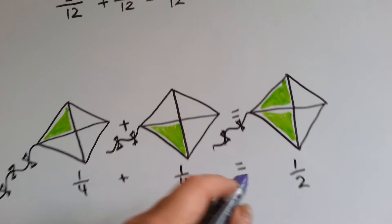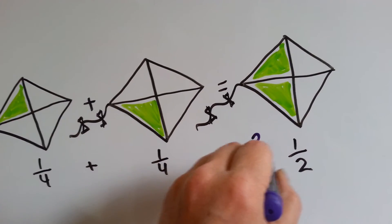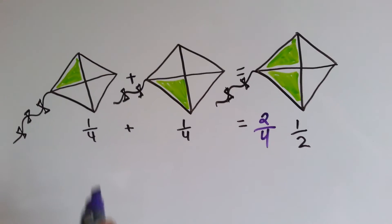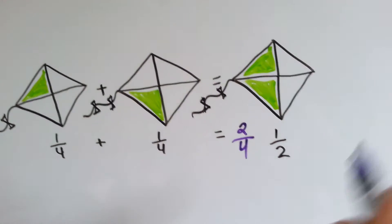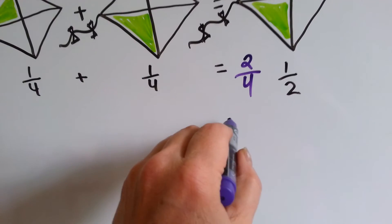1 fourth plus 1 fourth equals 1 half. It's really 2 fourths, isn't it? But it's also a half, because the 2 fourths was simplified.